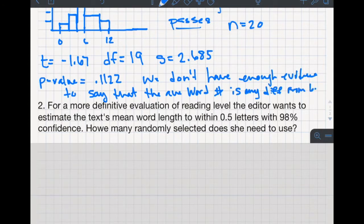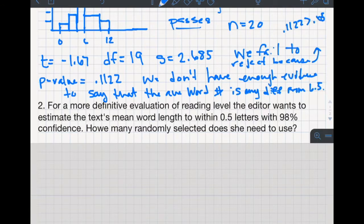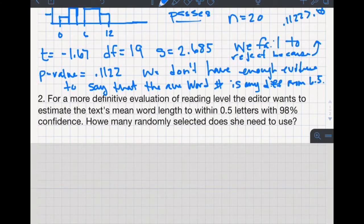So we fail to reject because 0.1122 is greater than 0.05, which is obvious enough room to say I fail to reject the null because my p-value is greater than my alpha level. Moreover, we don't have enough evidence to say that the average word number is any different than 6.5. In this case, our results support that the average very well could be 6.5.